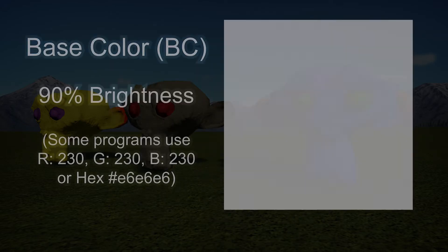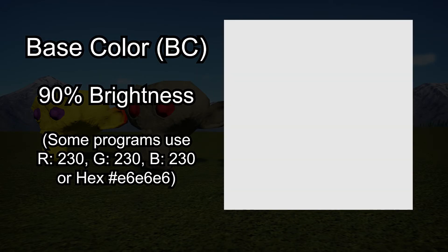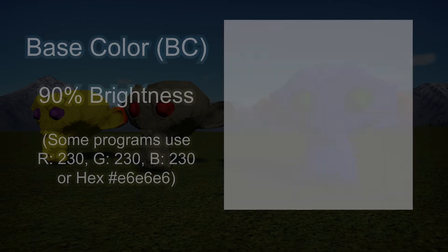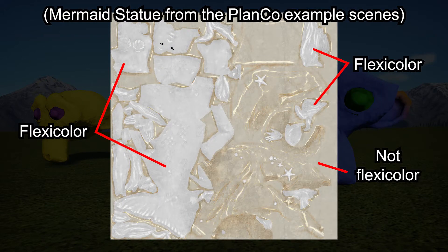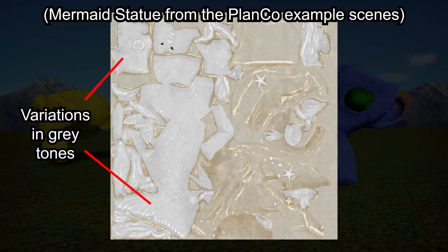For flexicolor maps to work properly, the areas of the base color, or BC, map that you want to be flexicolor should be very light gray, almost white. The guide recommends about 90% gray, as a completely white base color can cause issues in-game. Parts of your base color map that you don't want affected by flexicolor can just be their normal color. You can also have some different gray tones in the flexicolor parts of your base map, just to give it some variation.